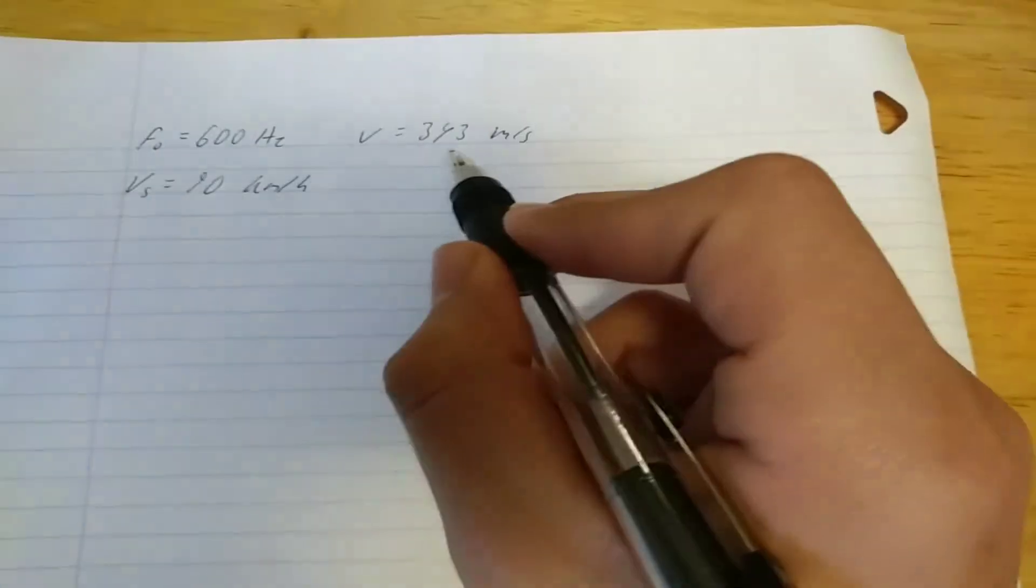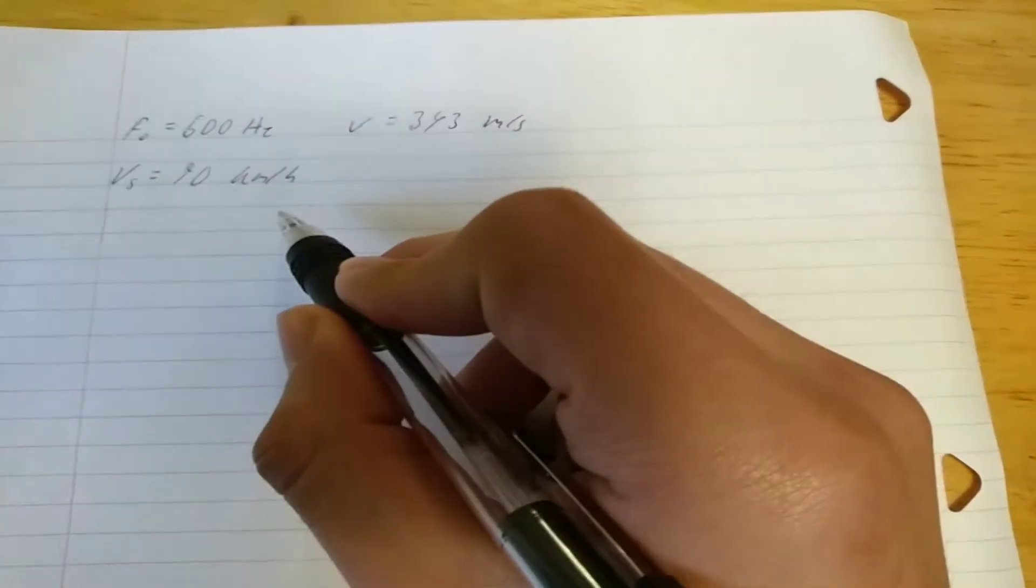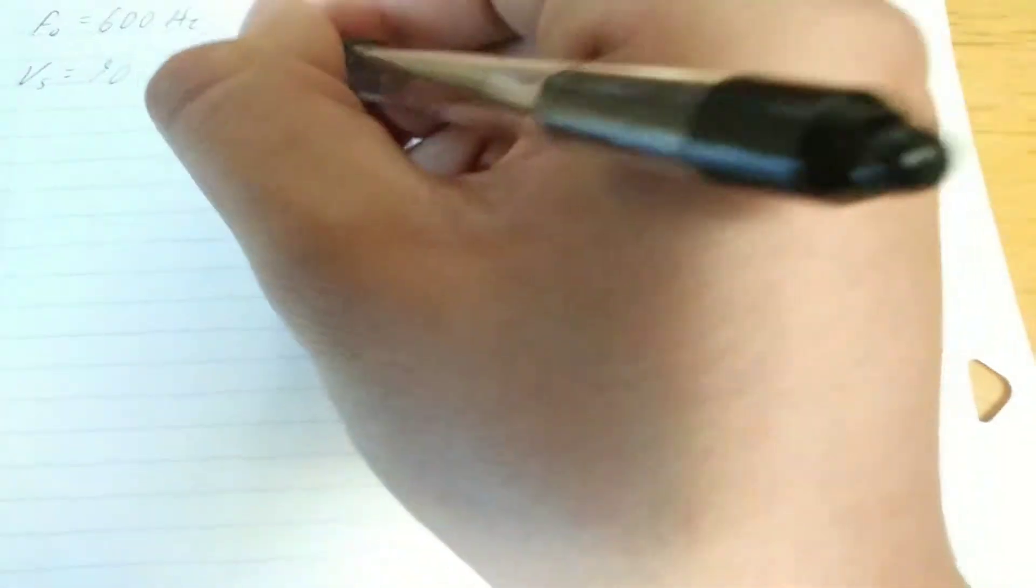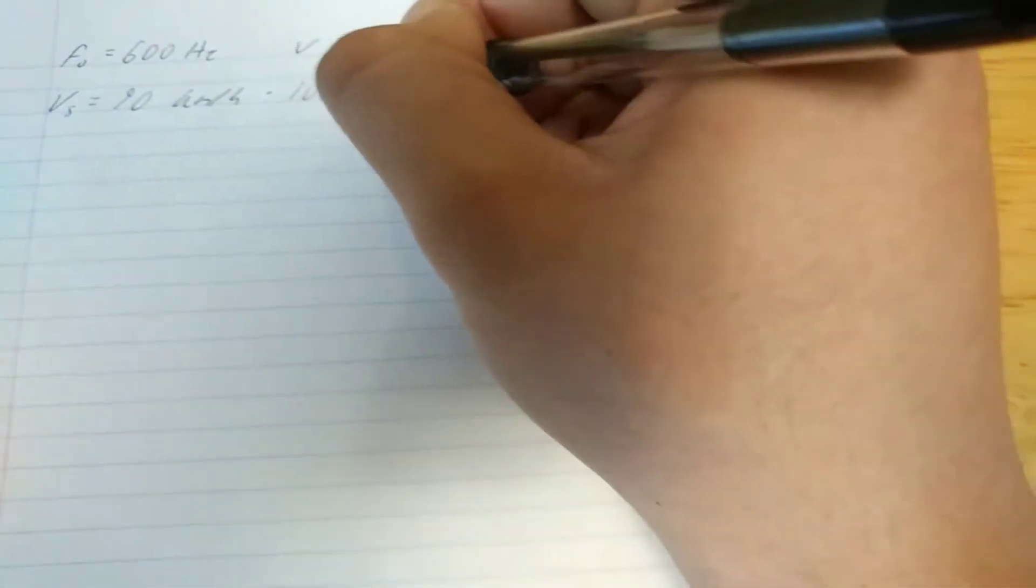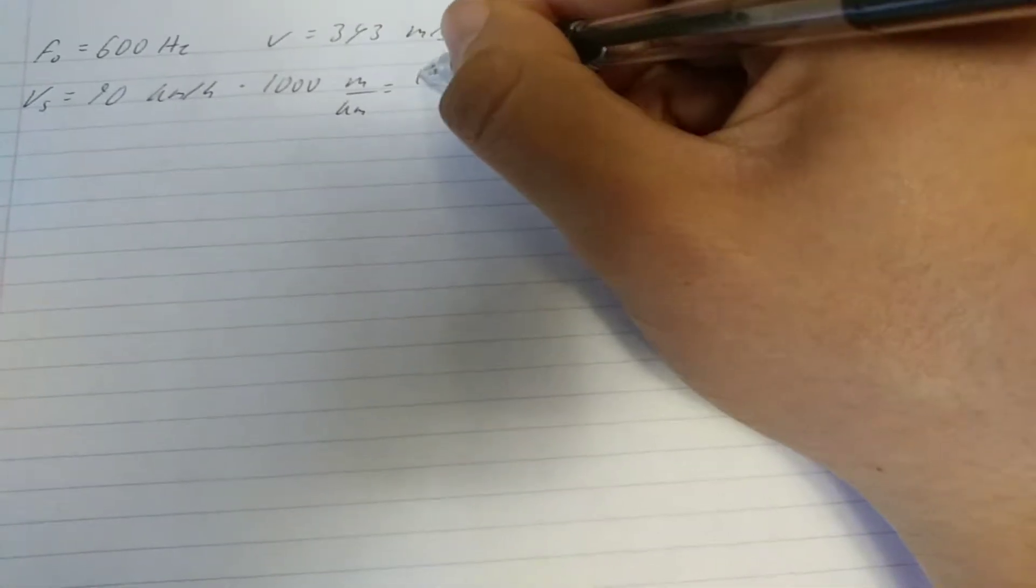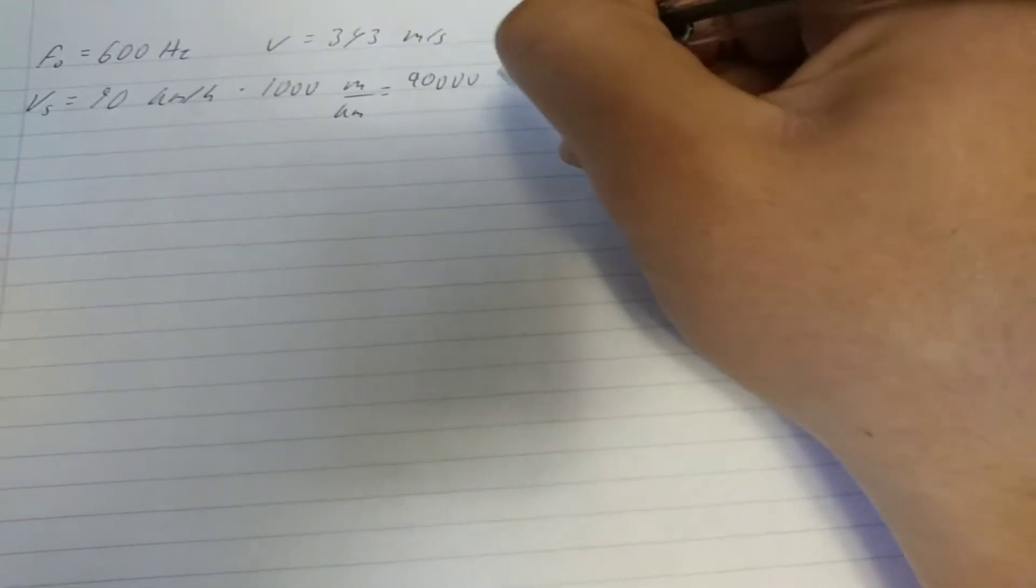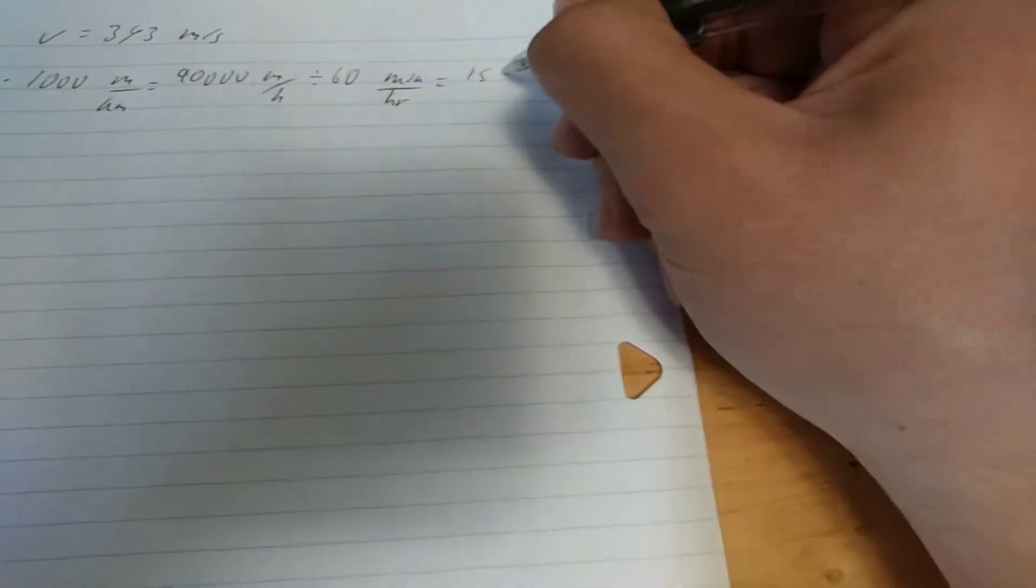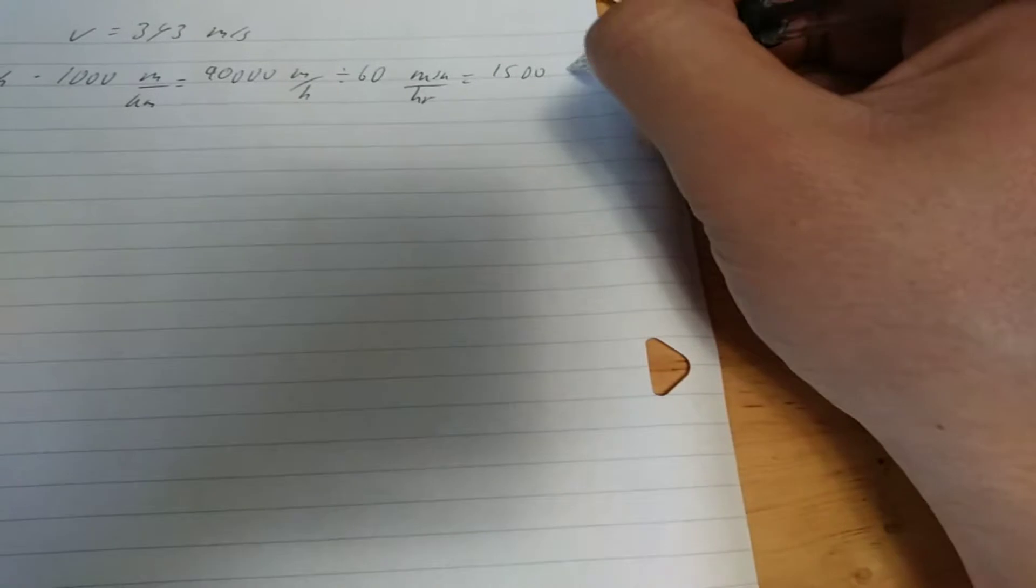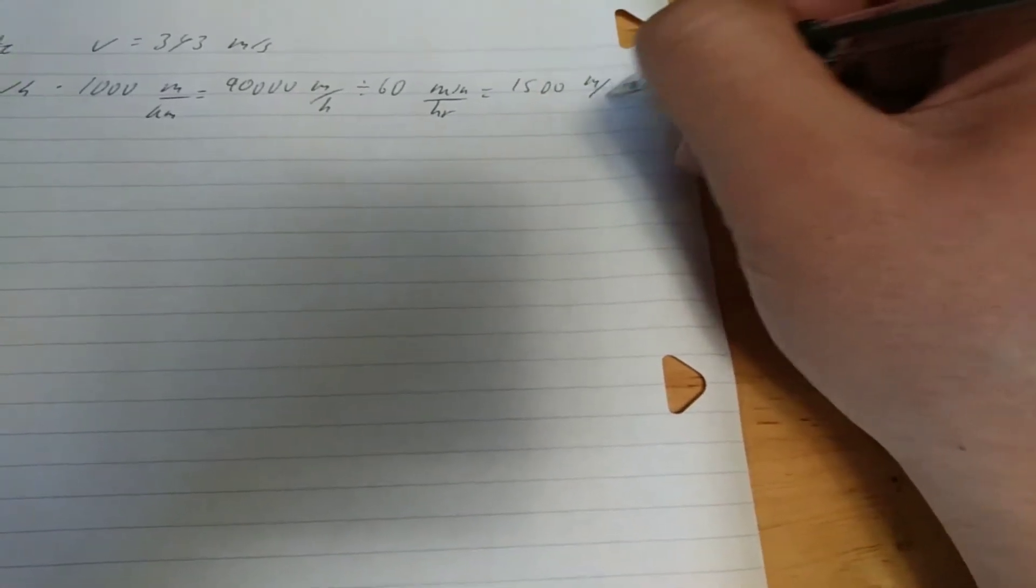But this is in kilometers per hour instead of our standard units, meters per second, so we need to convert this first. We do that by multiplying by 1,000 meters per kilometer, which gives us 90,000 meters per hour. Now we divide this by 60 minutes per hour in order to get 1,500 meters per minute.